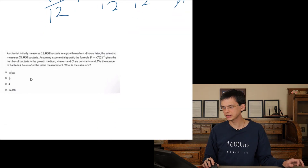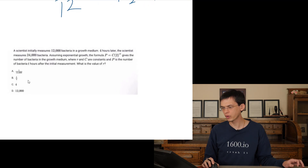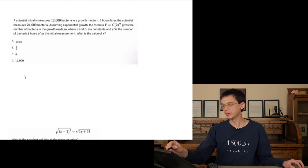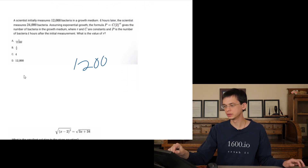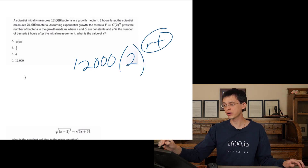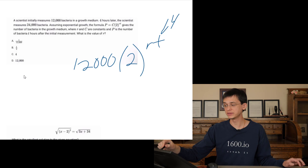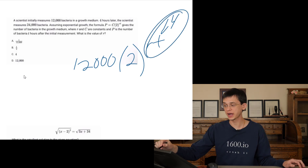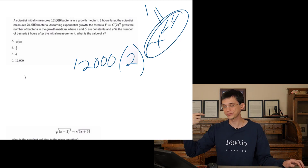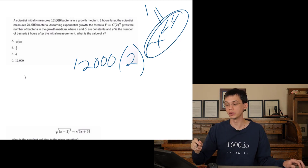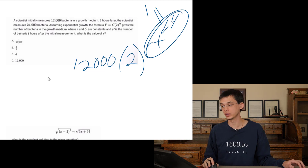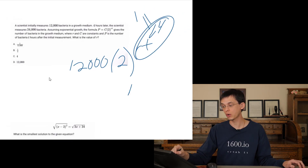Scientists initially measure 12 bacteria; after four hours it doubled. The relationship is 12,000 times 2 to the rt. We need to find r such that when t equals 4, the exponent equals 1 — because we've doubled from 12,000 to 24,000. So r times 4 must equal 1, meaning r equals one-fourth.